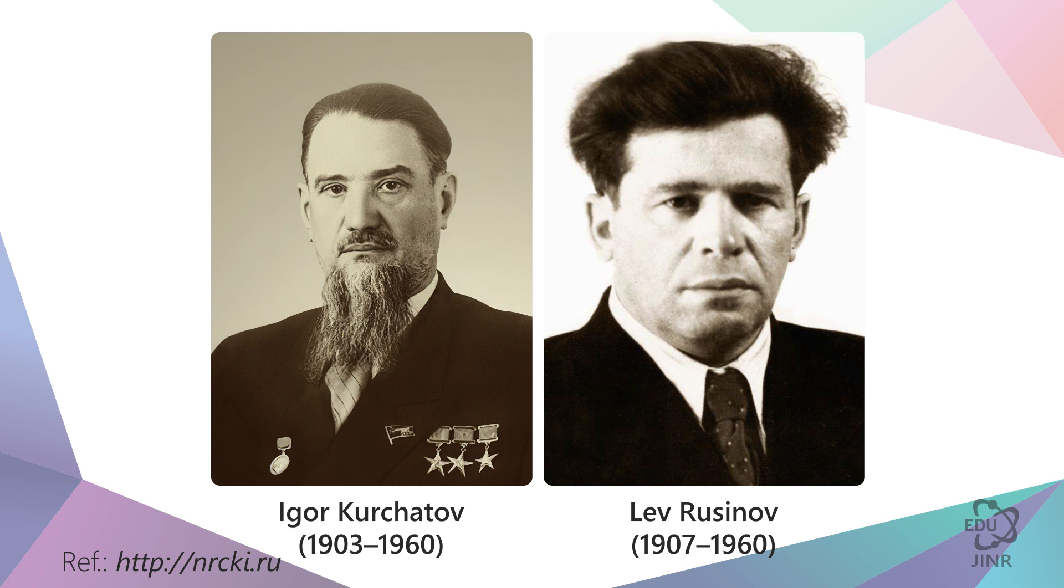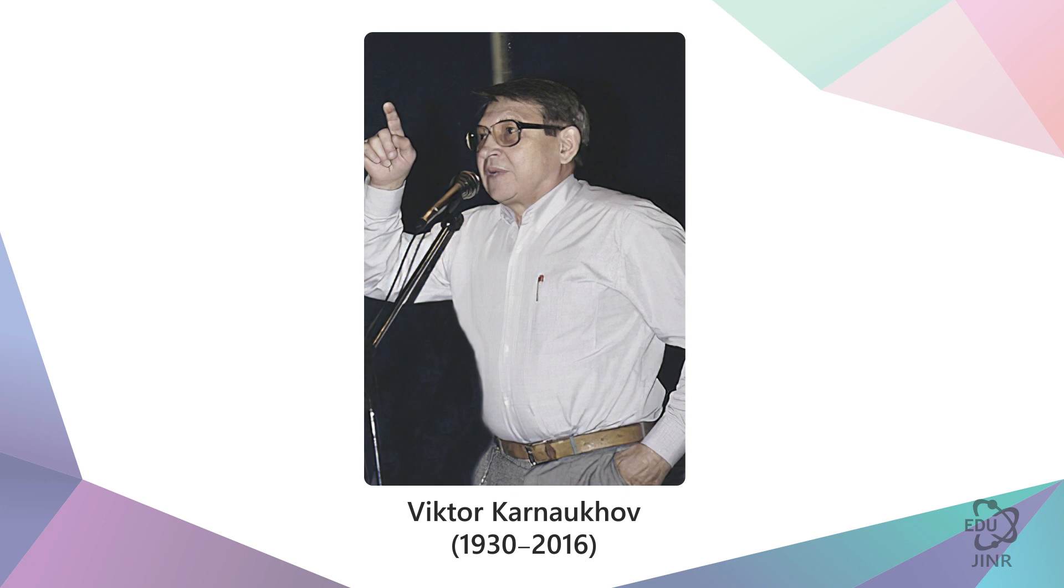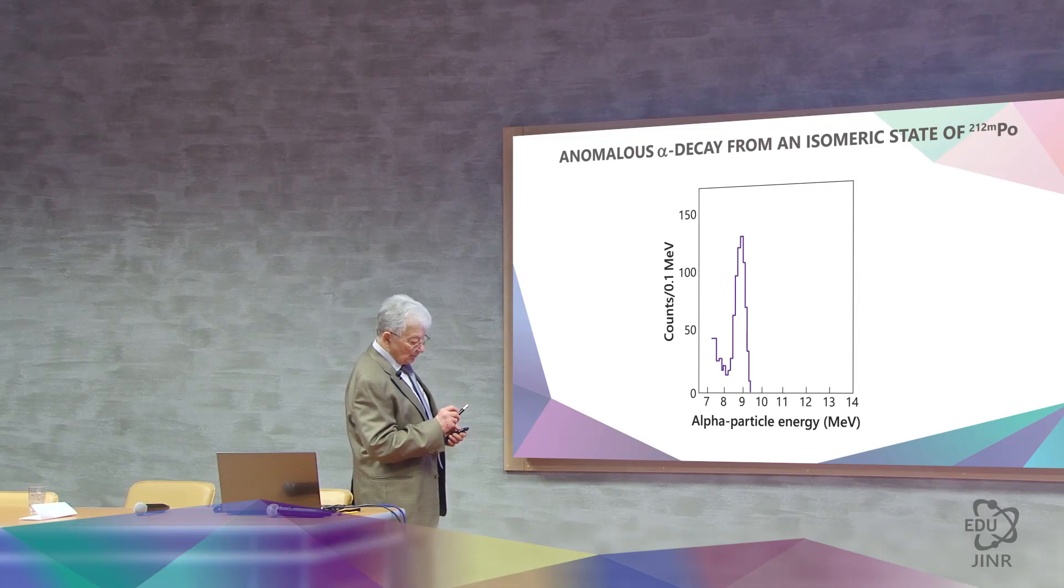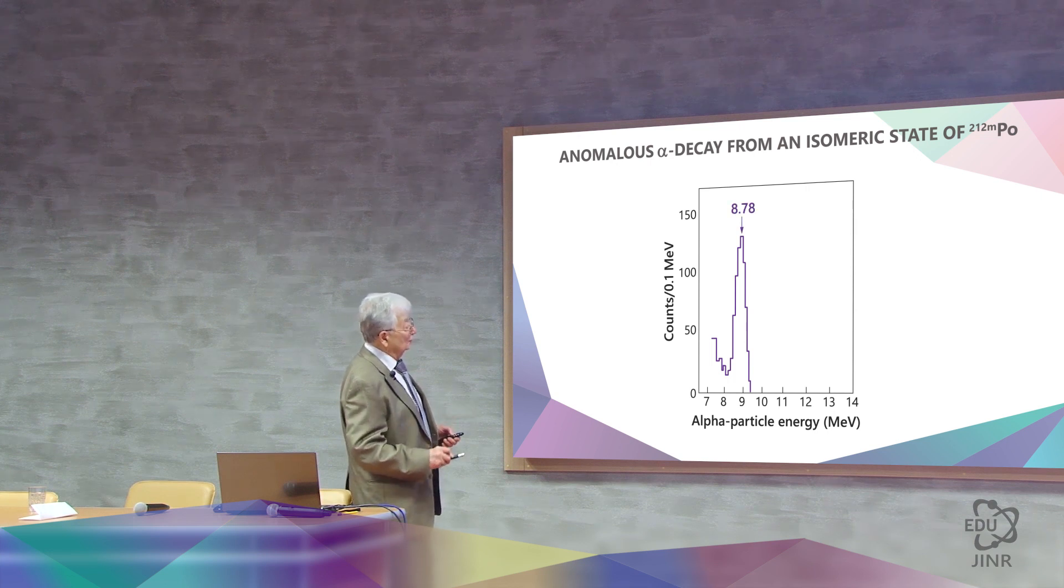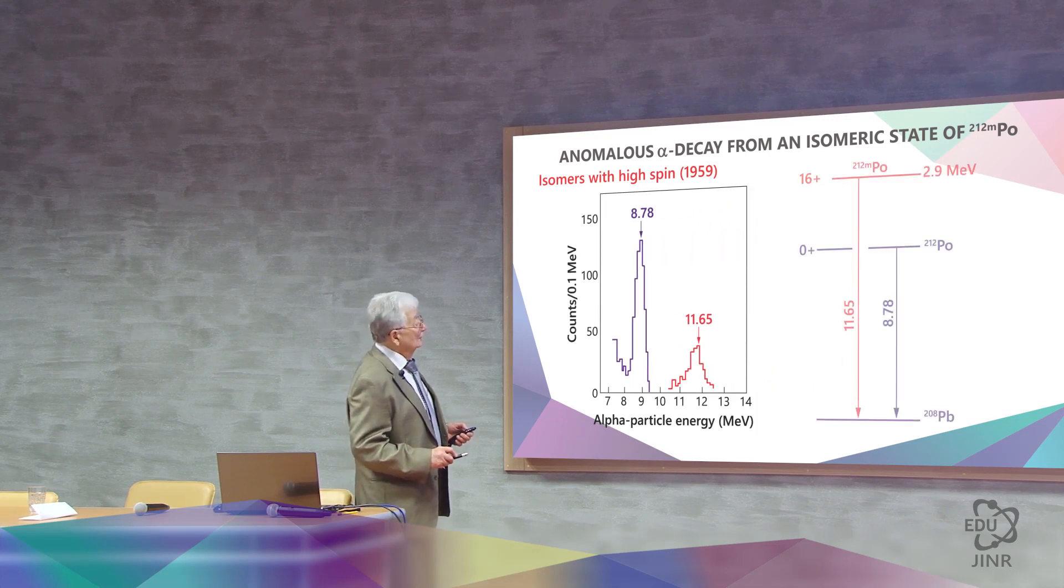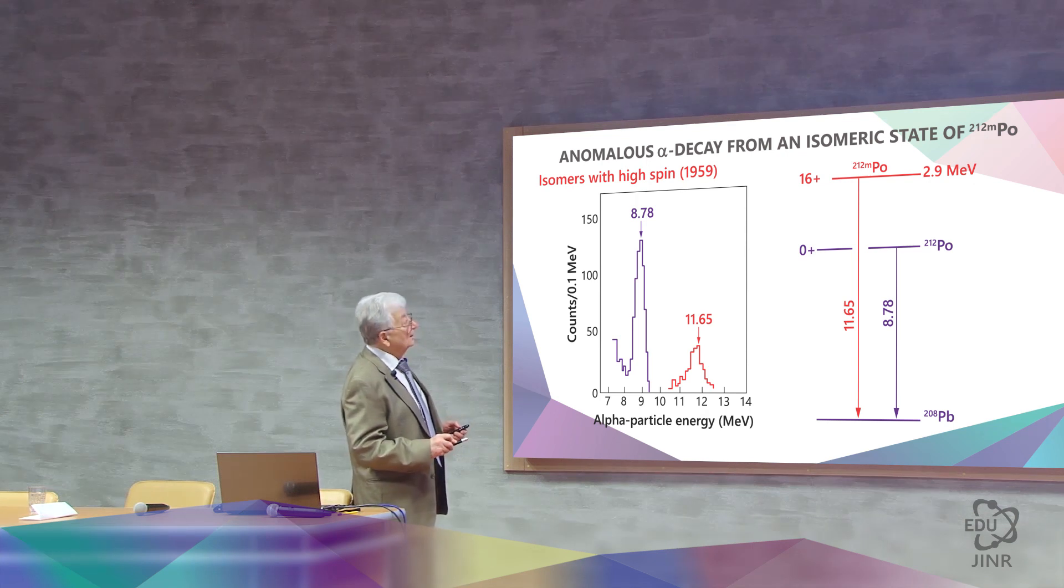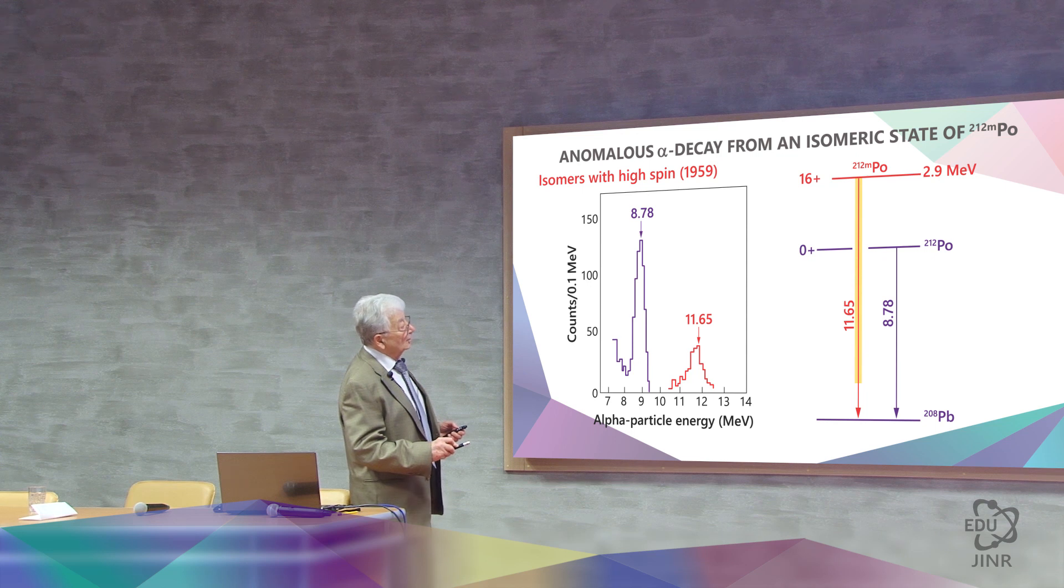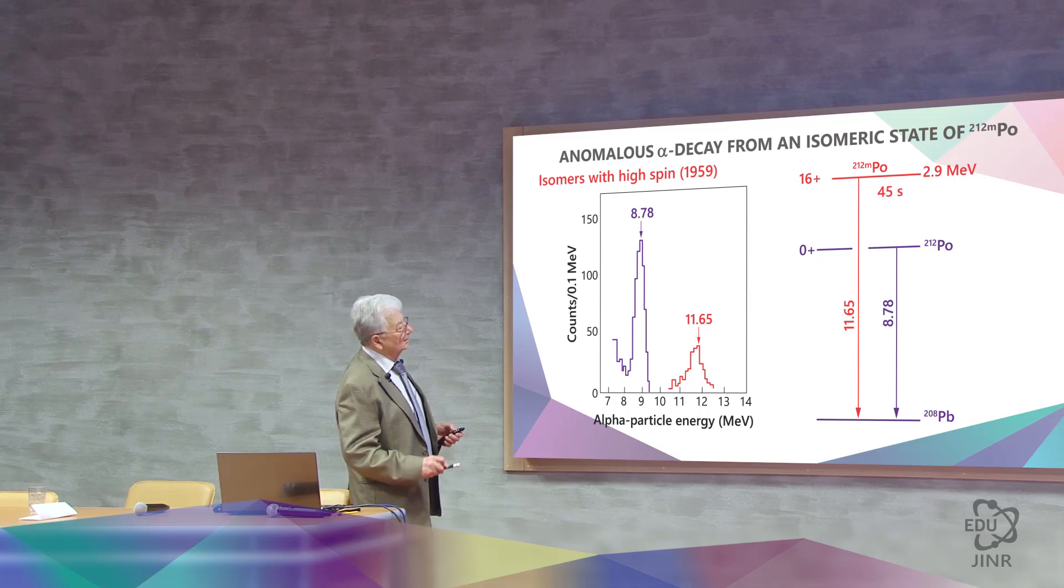Isomers were first discovered in 1939 by Kurchatov and Rusunov. And here at FLNR, Polikanov and his team were engaged in this, especially with polonium-212. In 1959, they discovered that polonium-212, besides the 8.78 MeV alpha particle line, has another line of 11.65. But what is very interesting is that this is a lot of energy. From here the decay is not shorter, but longer than from the ground state. If here it is 45 seconds, the half-life, then the known polonium is 0.3 microseconds.